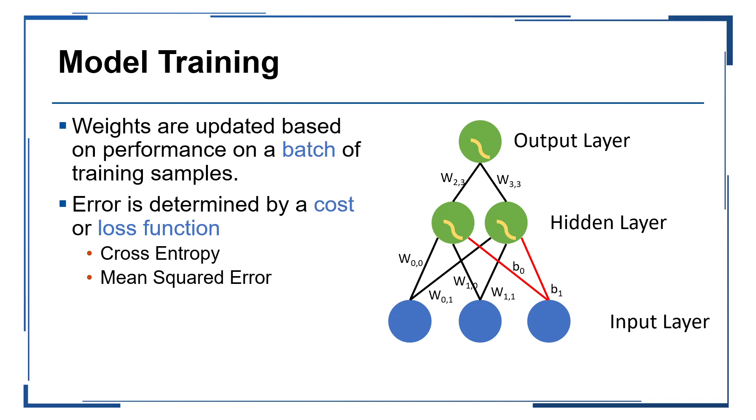Weights are updated periodically throughout each epoch based on the average performance of the model on a batch of training samples. So the batch size is something that we can define as part of our model training procedure, so we can define that prior to training.